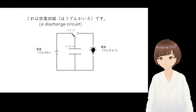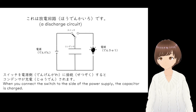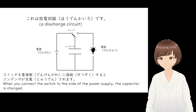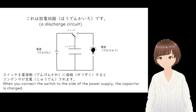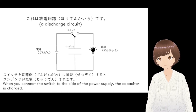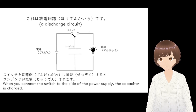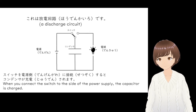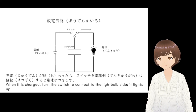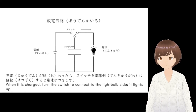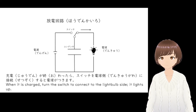これは放電回路です — this is a discharge circuit. スイッチを電源側に接続すると、コンデンサーが充電されます — when you connect the switch to the side of the power supply, the capacitor is charged. 充電する means to accumulate electrical energy, and 接続する means to connect. 充電が終わったら、スイッチを電球側に接続すると電球がつきます — when it's charged, turn the switch to connect to the light bulb side, and it lights up.